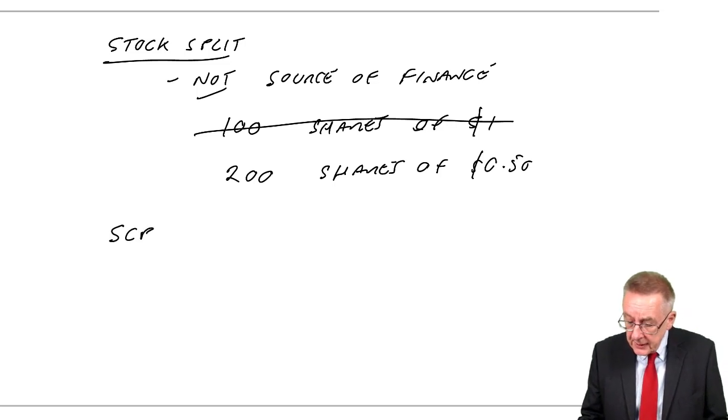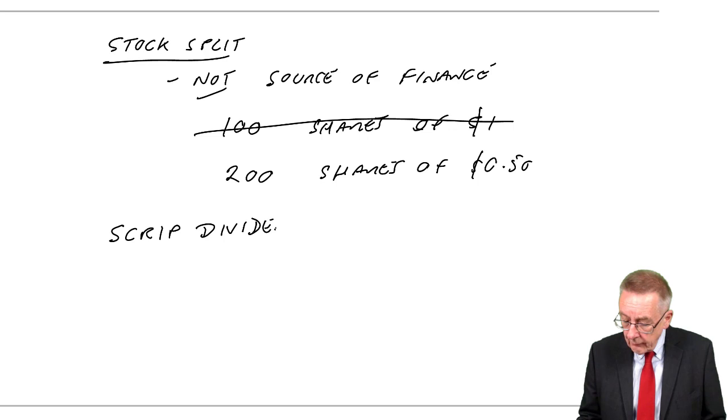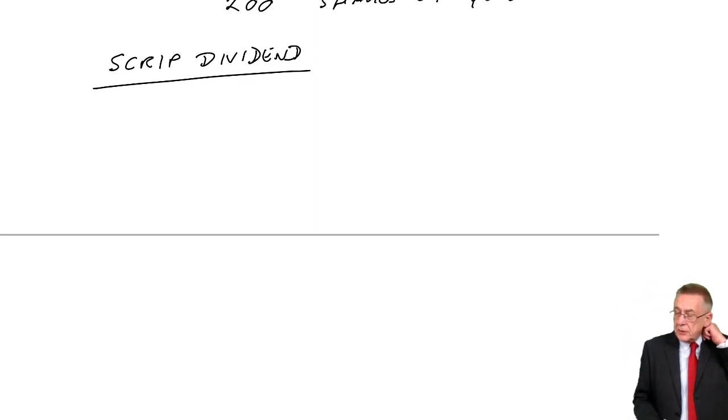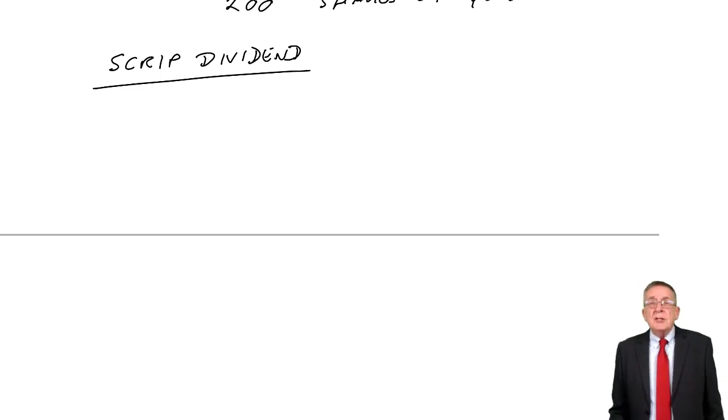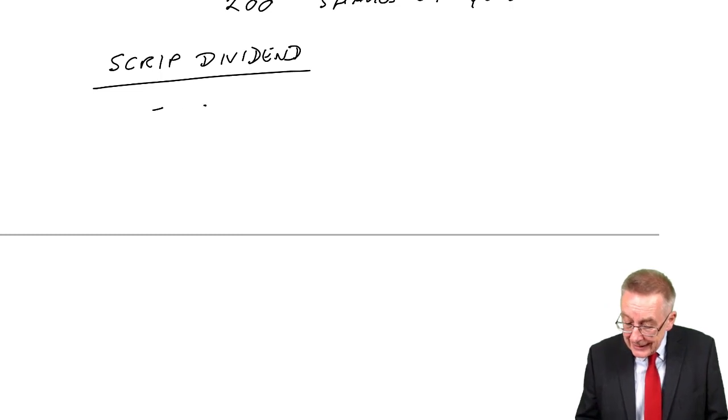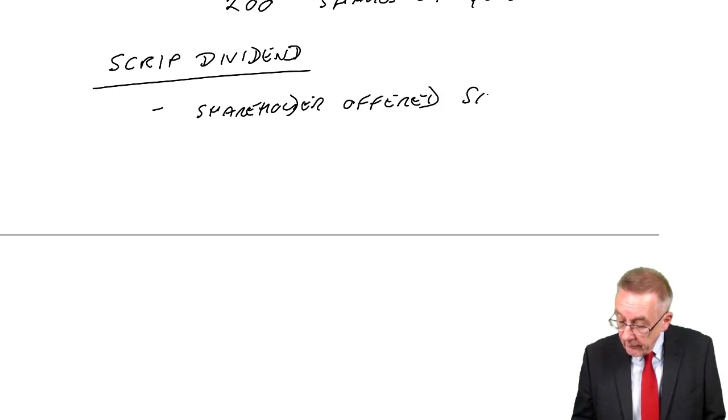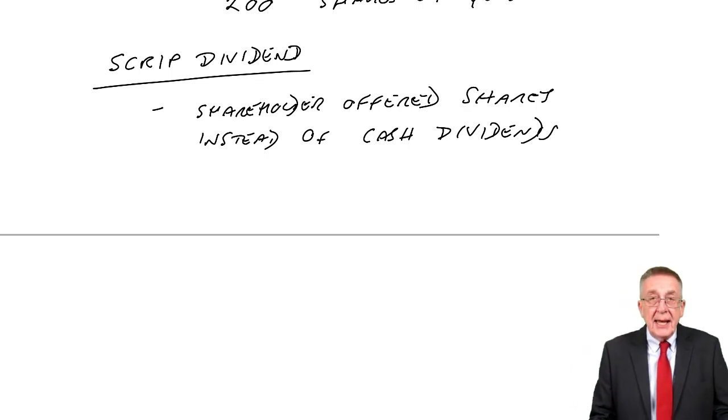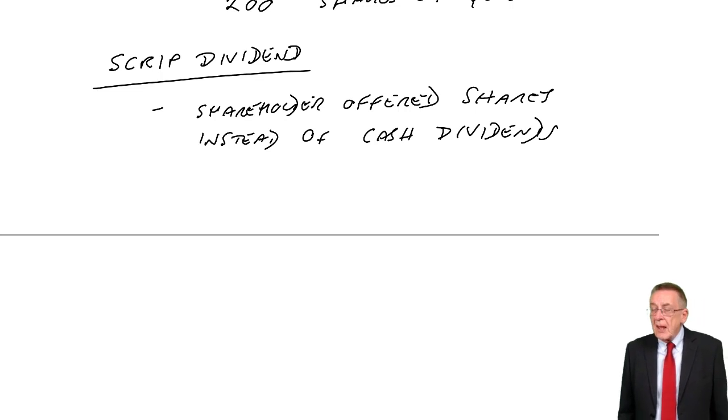Finally, a scrip dividend. And although you should be aware of all three, this is, for the exam, the most important of the three. A scrip dividend is where shareholders are offered shares instead of a cash dividend. You see, conventionally, dividends are paid out in cash. You get a dividend of five cents a share or whatever.